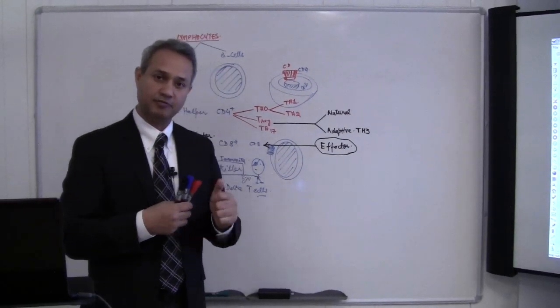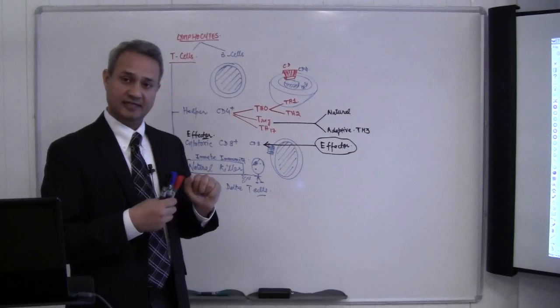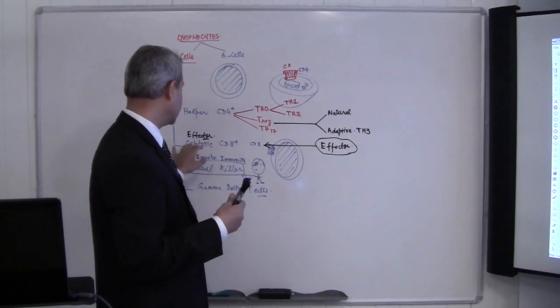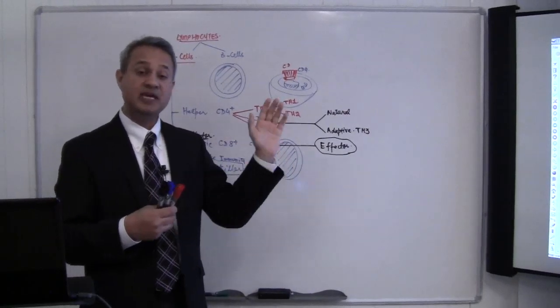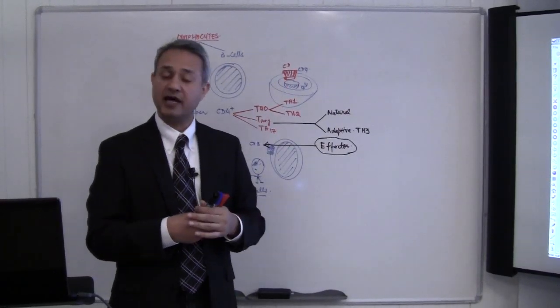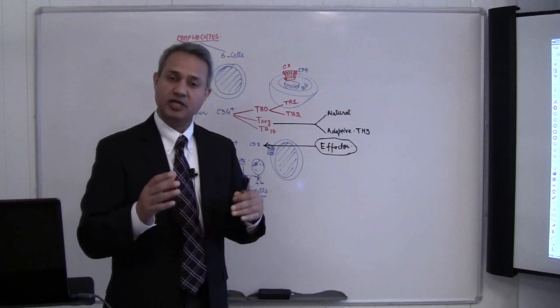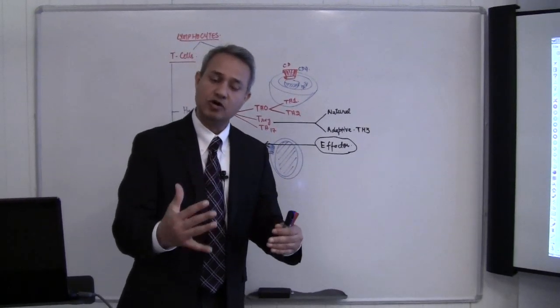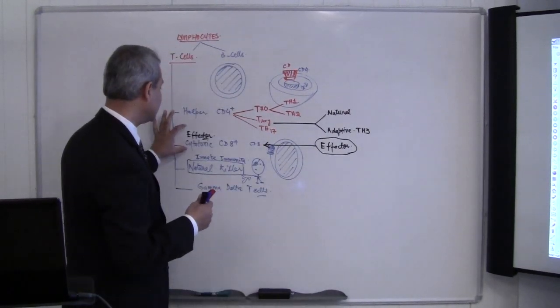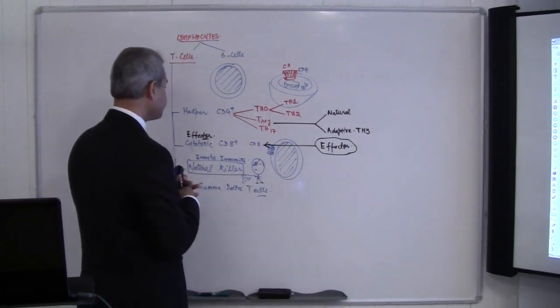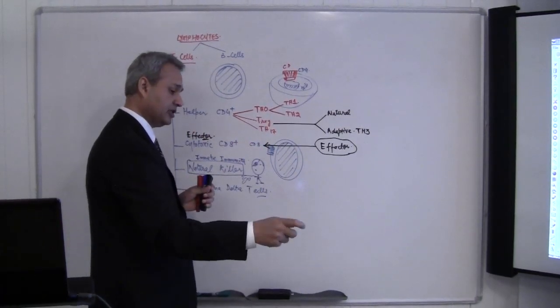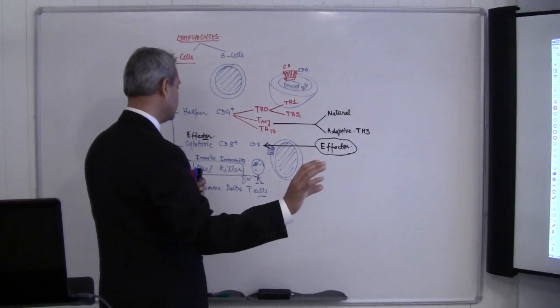For example, what are other effector cells? Natural killer cells are effector cells, cytotoxic T cells are effector cells, macrophages are effector cells, B cells which make antibodies are effector cells. They're effecting in different ways, but these are also effector cells. Effector cells are those which are directly working with the immune infection to eradicate it.